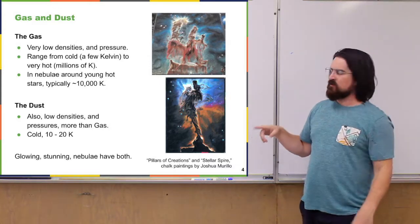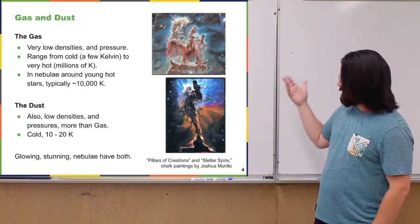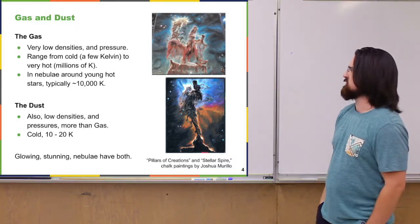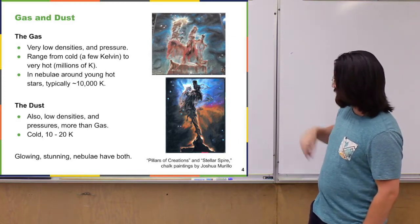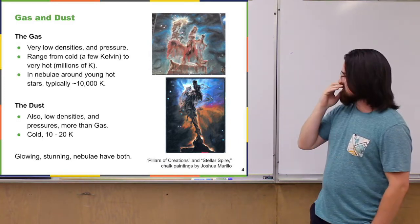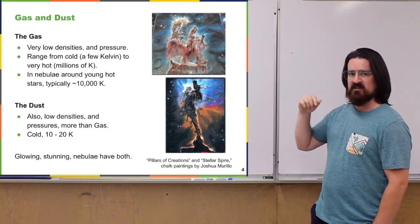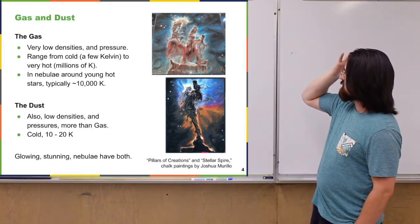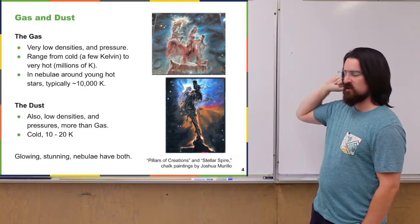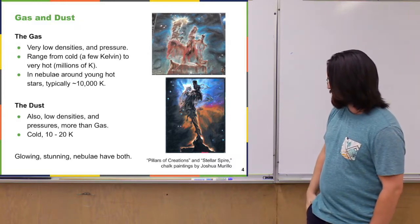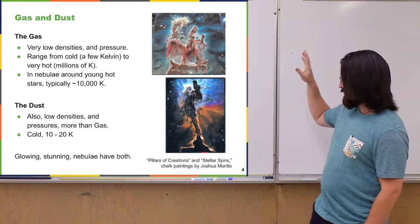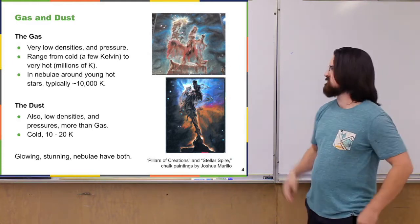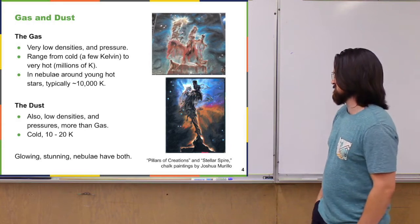Like I pointed out earlier, these glowing nebulae contain both gas and dust. I'm going to throw in some of my own artwork here — a bit of a nebula phase if you want to call it that. On the top is what's known as the Pillars of Creation; on the bottom is what's known as the Stellar Spire. They're both within what is termed the Eagle Nebula — different structures within it.